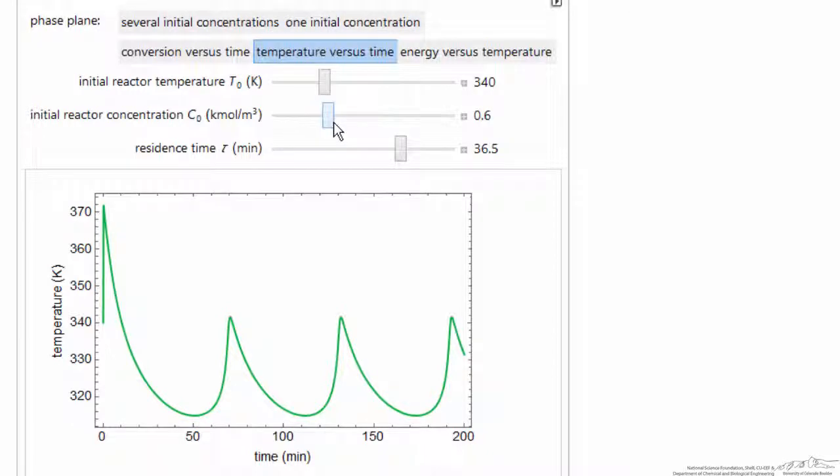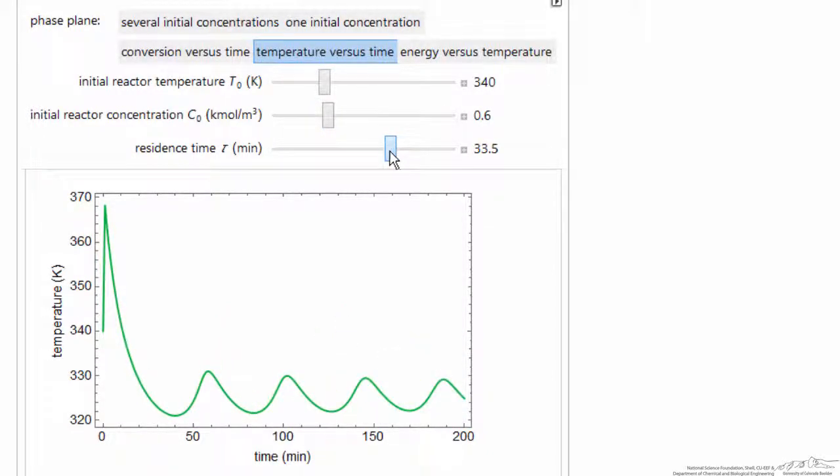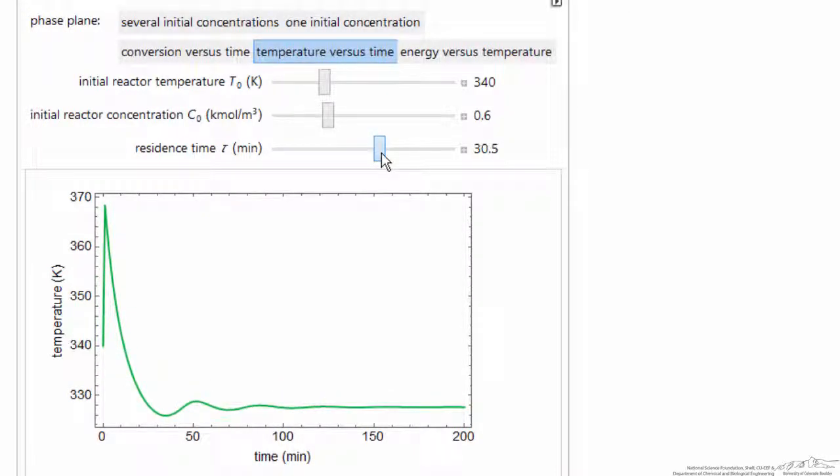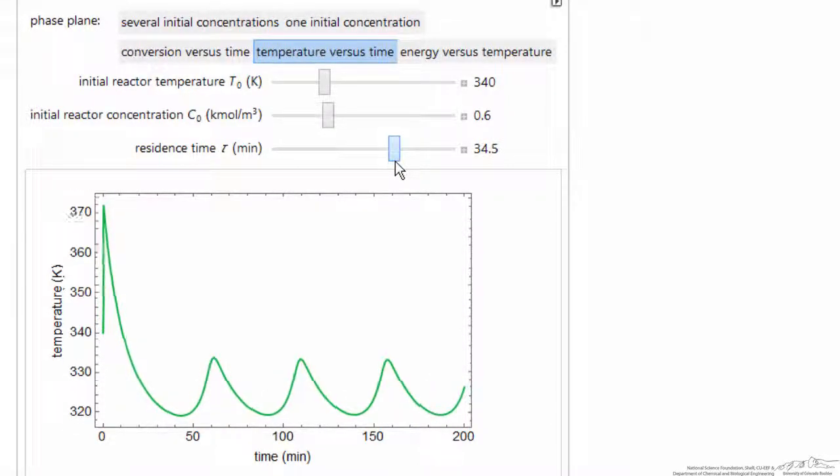So over certain conditions of residence time, we can get these oscillations. And then other conditions, it stabilizes, and we only have a stable solution as opposed to continuous oscillations.